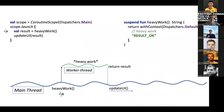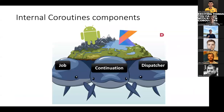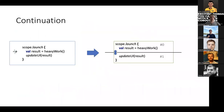Let's get a deep dive into coroutines and take a look at how they are structured inside. Let's consider three of the most important components of coroutines: continuation, job, and dispatcher. First, let's take a look at continuation. It is basically the most important, the base component of coroutines. Developers usually do not interact with continuation directly because it's more of an implicit component, but it is still extremely important.